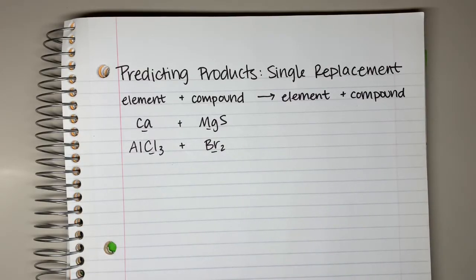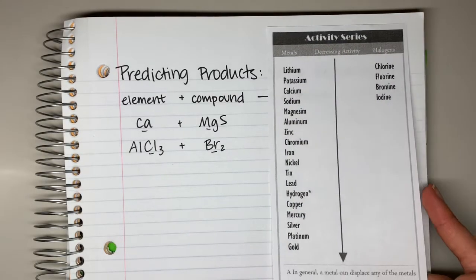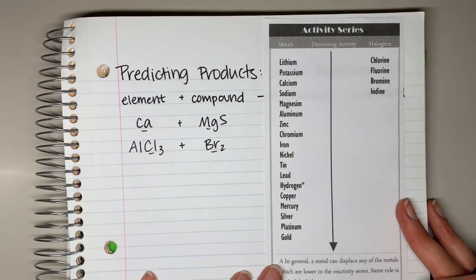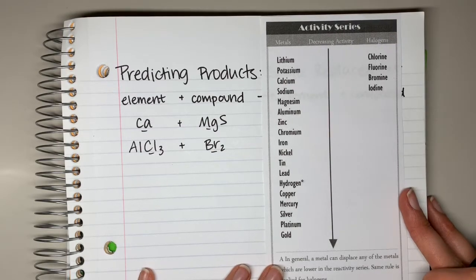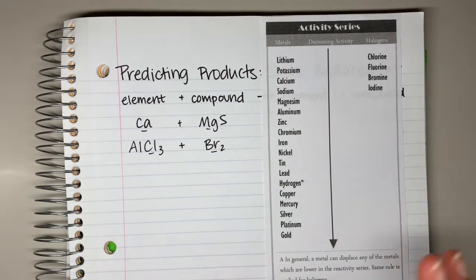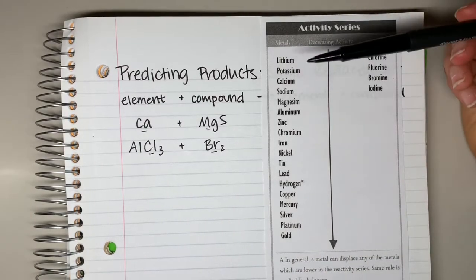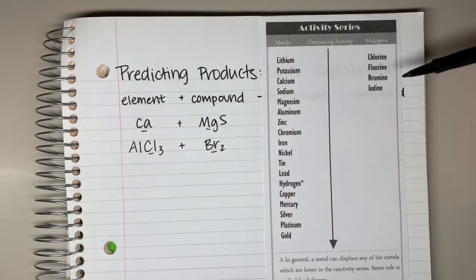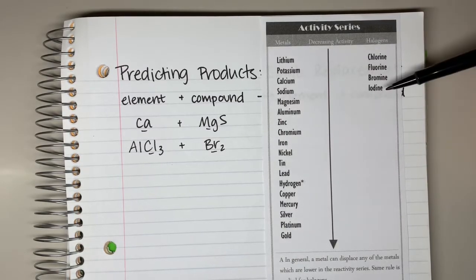However, there is one more step, and that comes from the activity series. You should have this on a reference sheet — if not, you can find it on the internet. There are two sides to the activity series: the metals side and the halogen side.